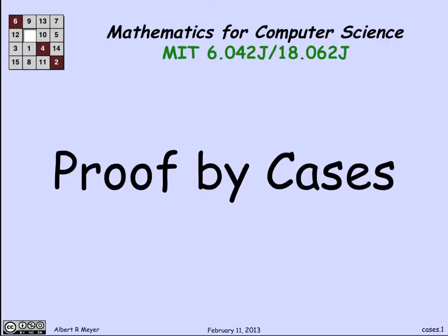Another basic proof technique is called proof by cases, in which we prove something by breaking it up into pieces that are easy to prove, but that together cover all possibilities.